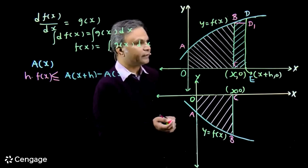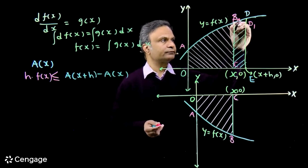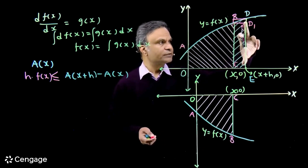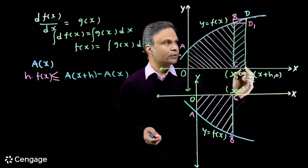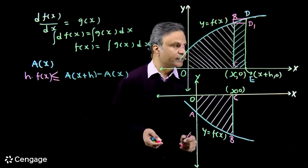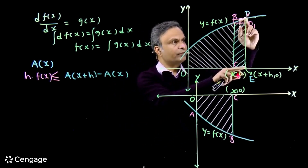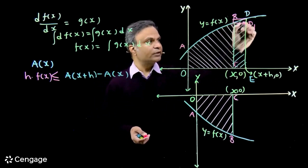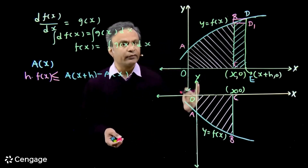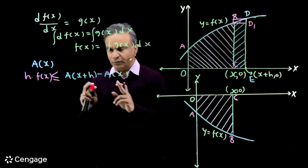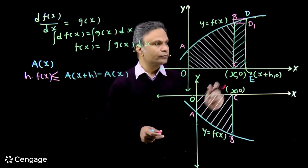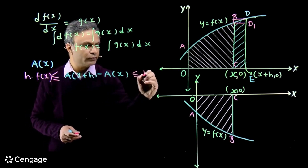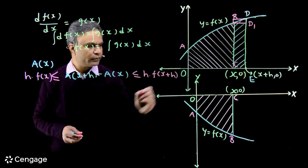Now we draw a larger rectangle. The height of this outer rectangle is f(x+h), since the x-coordinate of point D is x+h and the function value there is f(x+h). The width is h, so the area of this bigger rectangle is h × f(x+h). The area of region BDEC is certainly less than or equal to the area of this outer rectangle. So we have: A(x+h) − A(x) ≤ h × f(x+h).